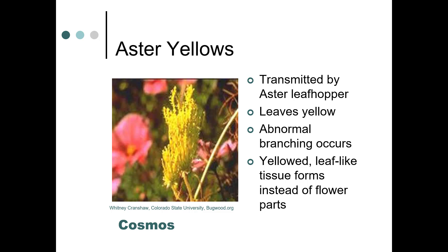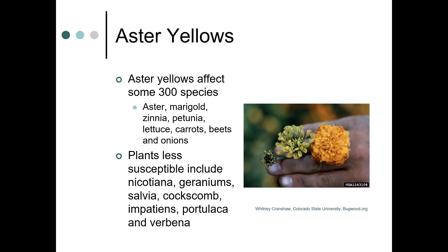Aster yellows is a phytoplasma transmitted by the aster leafhopper. The leaves are yellow, you get abnormal branching, and then you get yellow leaf-like tissue instead of floral parts — this is on cosmos. Aster yellows can affect some 300 species; many of them are in the Asteraceae, but it's not just the aster family — other families are affected as well.